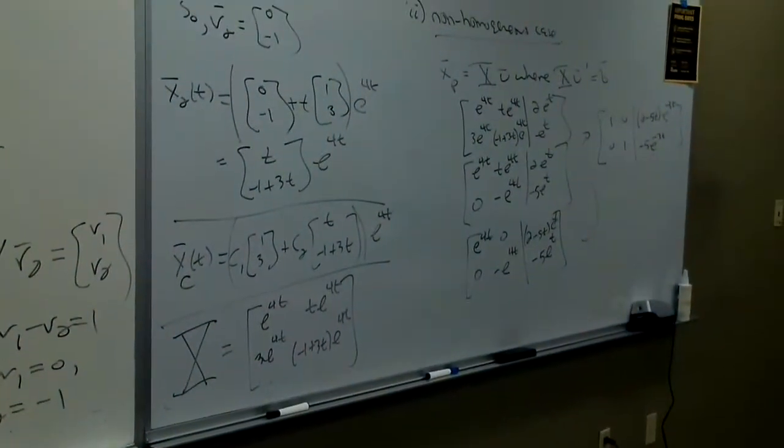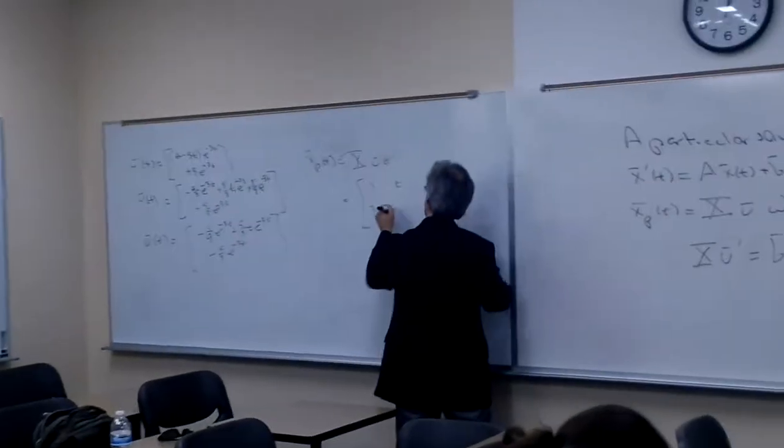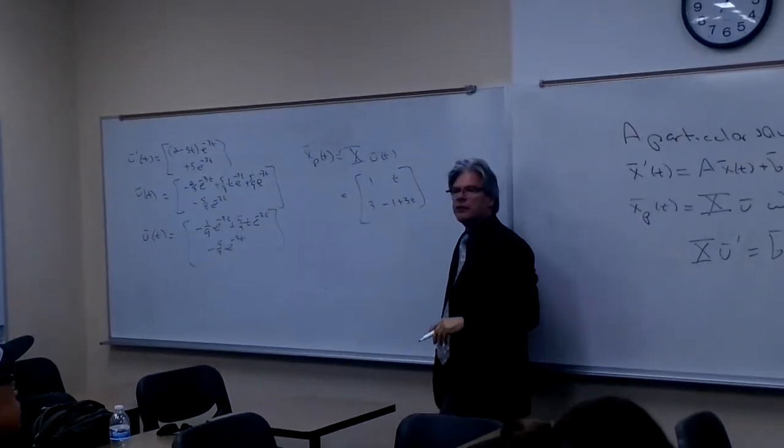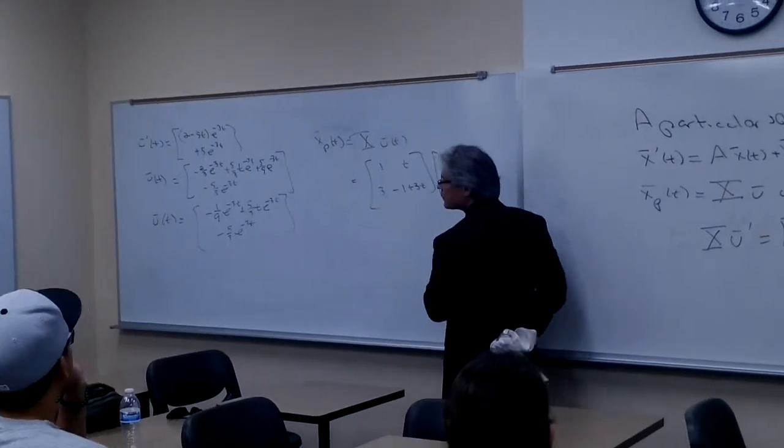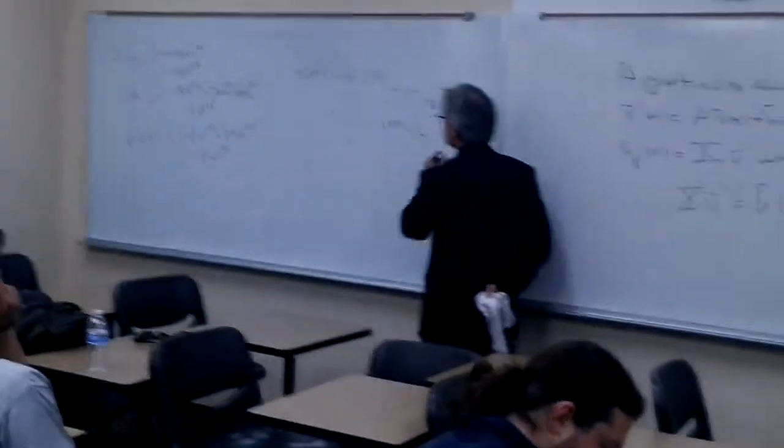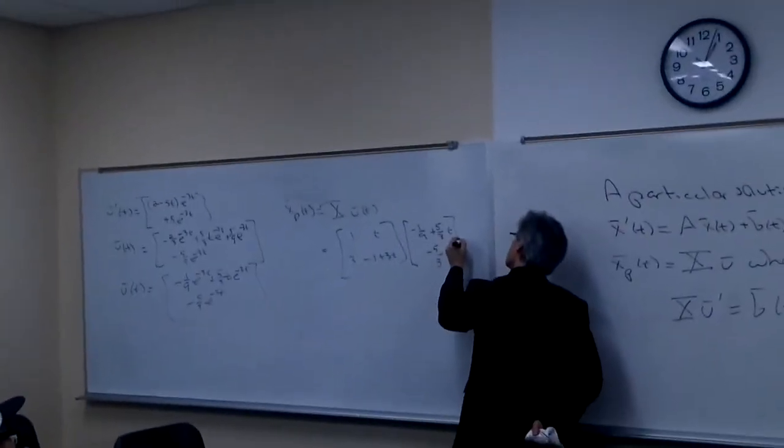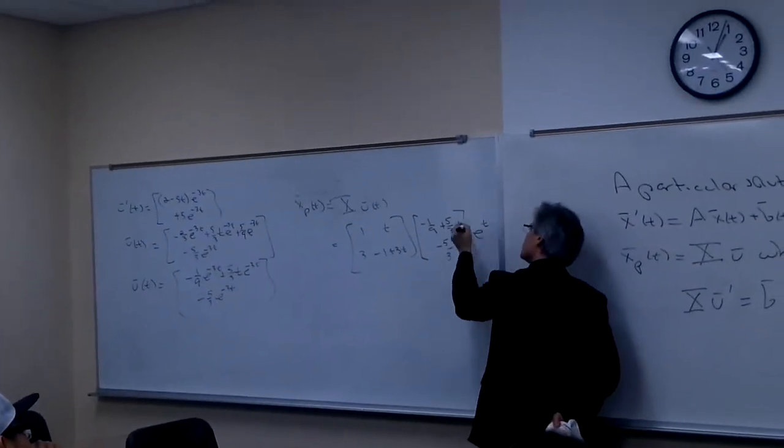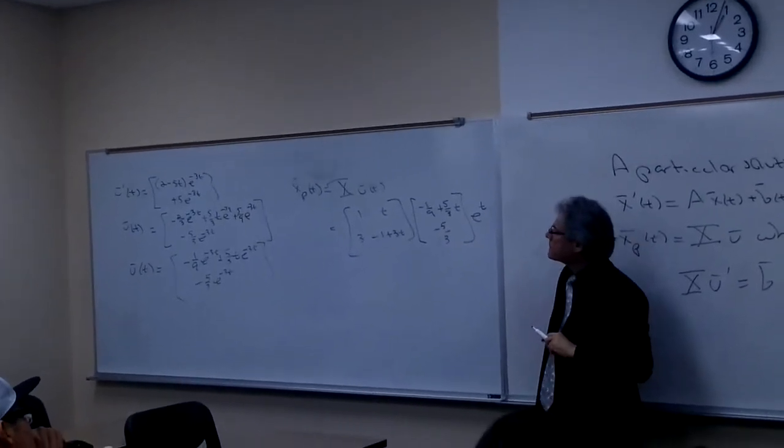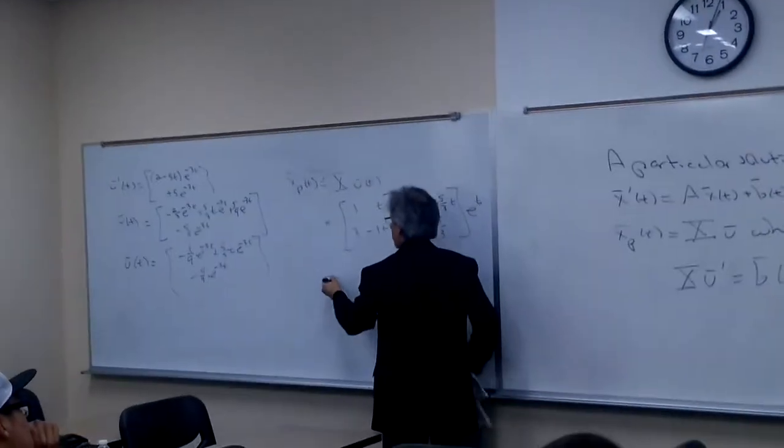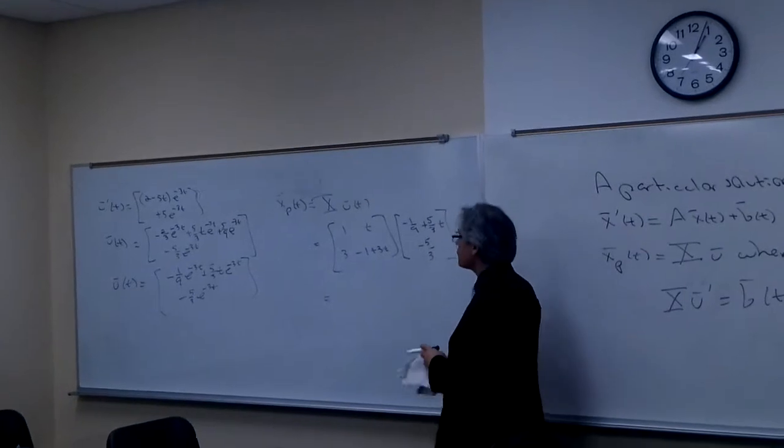That's going to give me 1, 3 and a negative 1 plus 3. Do you mind if I factor out e to the 4t? As a matter of fact, for my u bar to make my life a little more simplistic, I'll factor out e to the negative 3t. That's going to give me a negative 1 ninth plus 5 thirds t and a negative 5 thirds. You guys, what do I have to say? E to the 4t. No, it's just a single piece. And I think you guys have to say, multiplication is defined as a 2 by 2 times a 2 by 1. So the resulting product is going to be a 2 by 1.